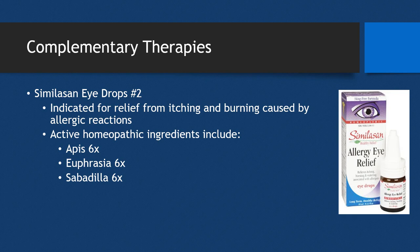An alternative homeopathic treatment option for allergic conjunctivitis is Similasan Eye Drops No. 2, indicated for relief from itching and burning caused by allergic reactions. It contains three homeopathic active ingredients: Apis, Euphrasia, and Sabadilla, each at a 6x concentration.